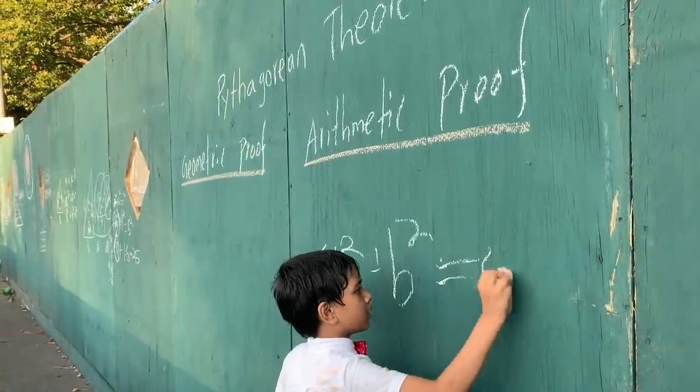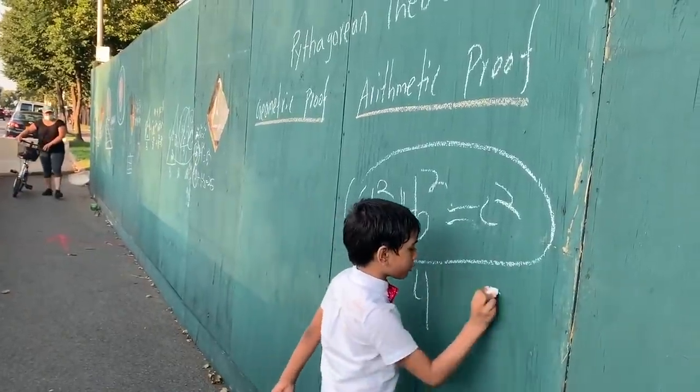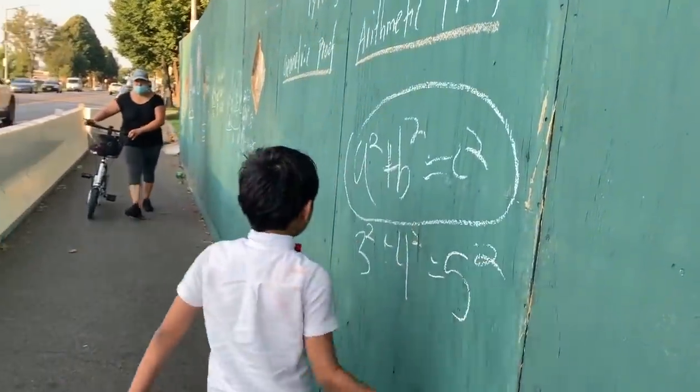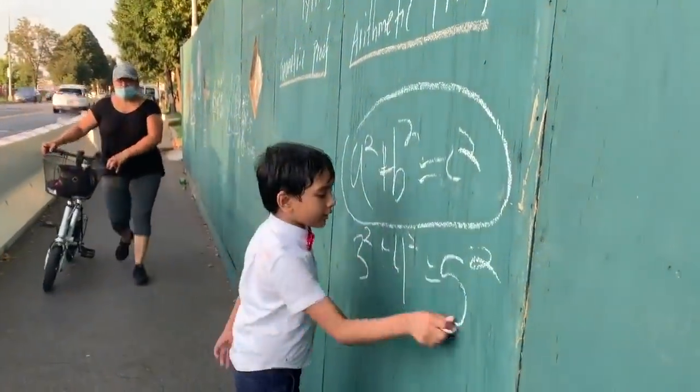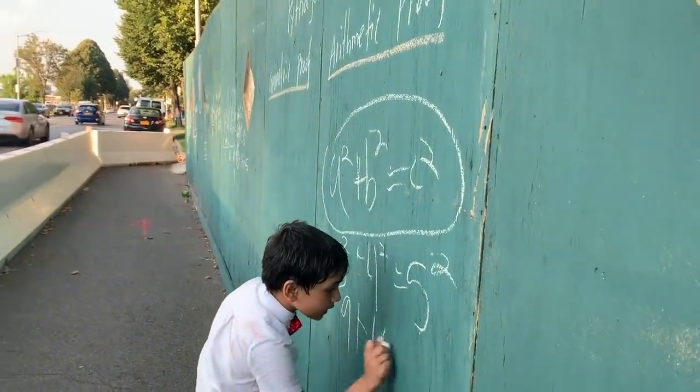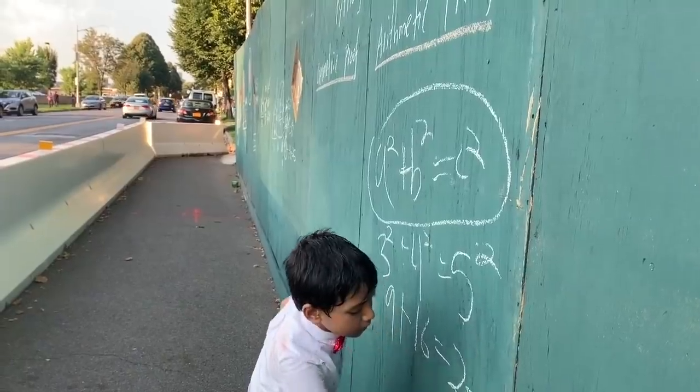A squared plus B squared equals C squared. Today we're going to use the Pythagorean theorem with the 3-4-5 triple. So 3 squared plus 4 squared equals 5 squared. That gives us 9 plus 16 equals 25.